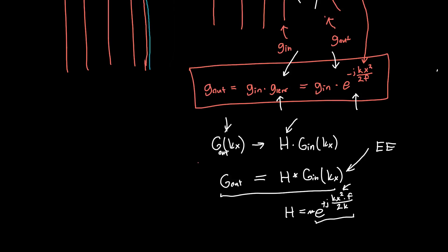The most important takeaway is that transfer functions do not work the same way for lenses. They actually work with convolution because they're multiplication in space.